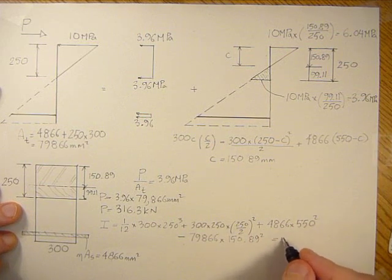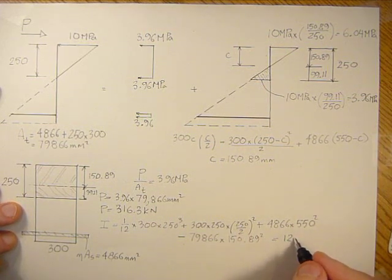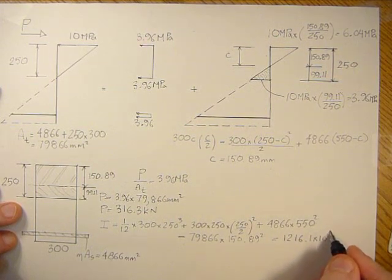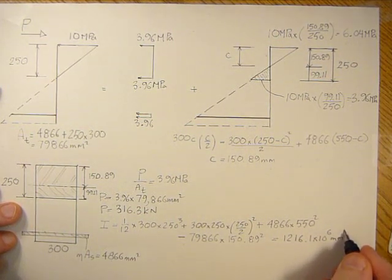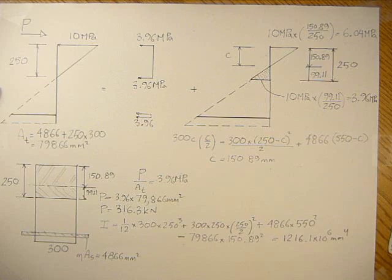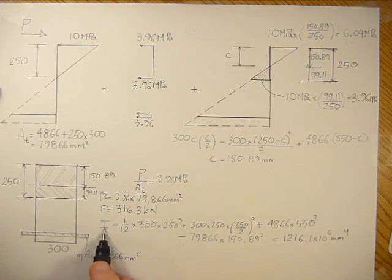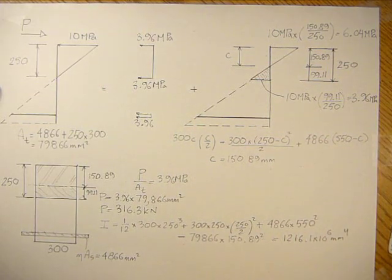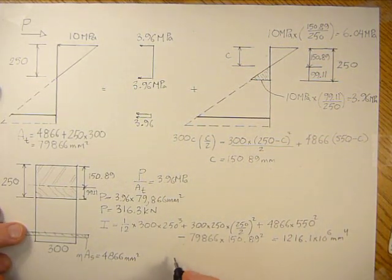When we calculate all this out, and I've already calculated it to save time, it's 1,216.1 times 10 to the 6 millimeters to the 4th. Now that we have that moment of inertia for this section, we can find out from M over I - we know P is solved as 316,300 newtons.